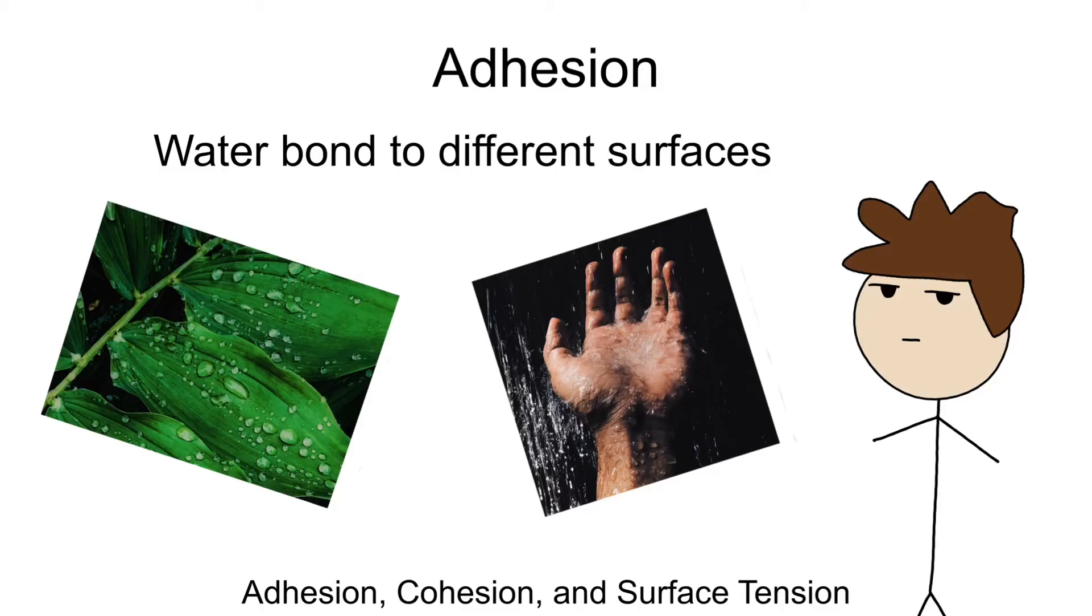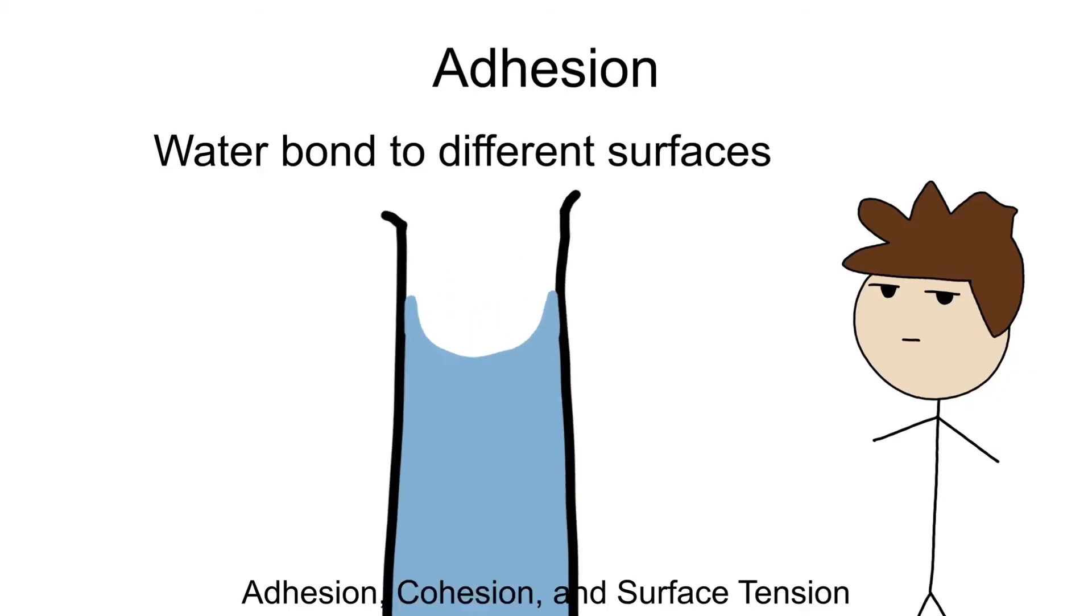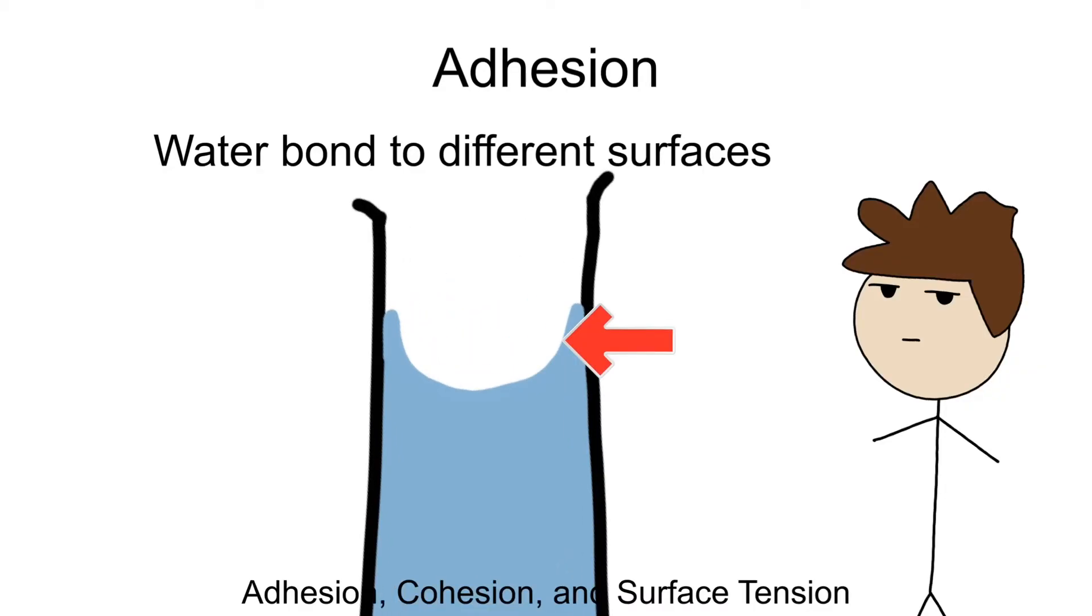One popular science-related example of adhesion tends to be the concave shape of the surface of water when you look at it through a test tube. Inside, you'll notice a U-shaped curve on the surface of the water.